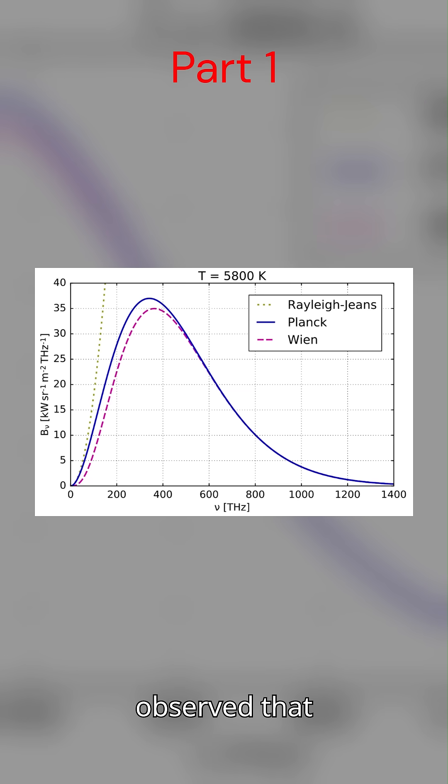Experimentally, however, scientists observed that black body radiation had a characteristic curve. Intensity would rise to a peak, and then fall off at shorter wavelengths. Reality didn't match theory, and physics was in crisis.